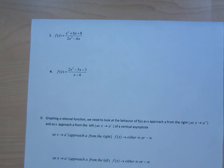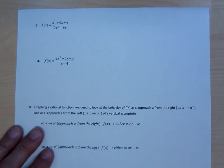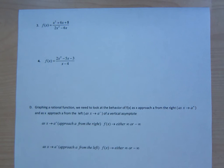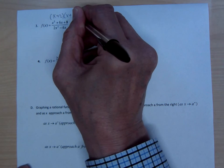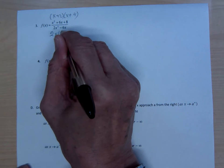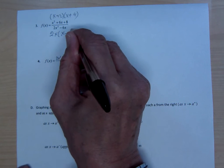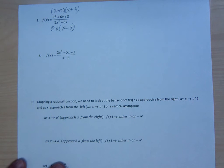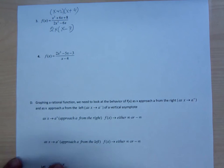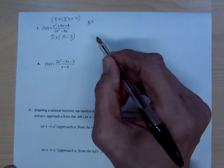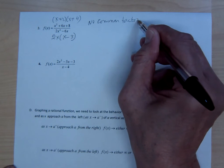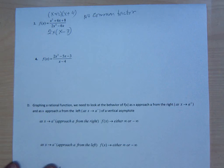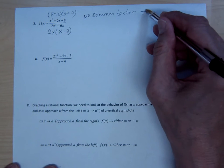We're going to continue — see if you know your stuff. Let's look at this one and factor. The numerator would be (x+2)(x+4), and the denominator has 2x in common; its factor would be (x minus y3). Is there any common factor between the top and the bottom? Obviously no common factor. So having no common factor tells you one thing: no holes.